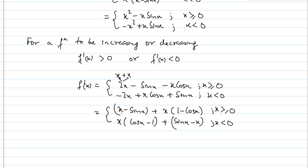अब देखते हैं: (x − sin(x)) यह positive होगा — greater than 0। And (1 − cos(x)) भी greater than or equal to 0 होगा — क्योंकि x, sin(x) से बड़ा होता है, और cos(x) lies between −1 to 1, तो 1 − cos(x) का minimum value 0 है। तो यह function हमेशा greater than 0 रहेगा।